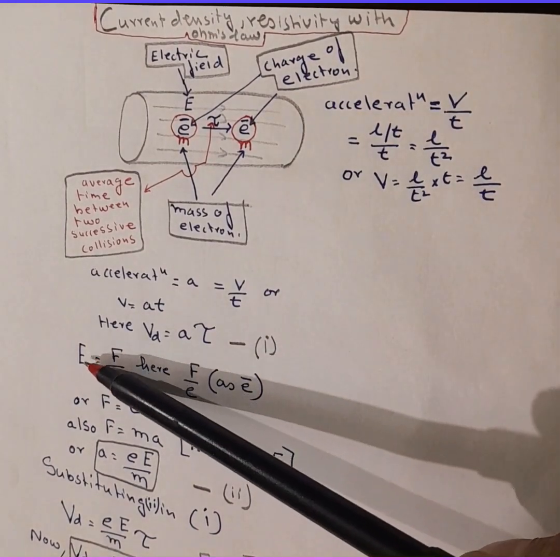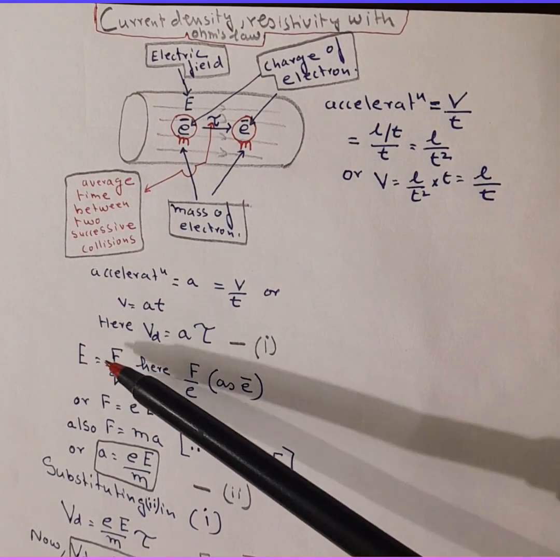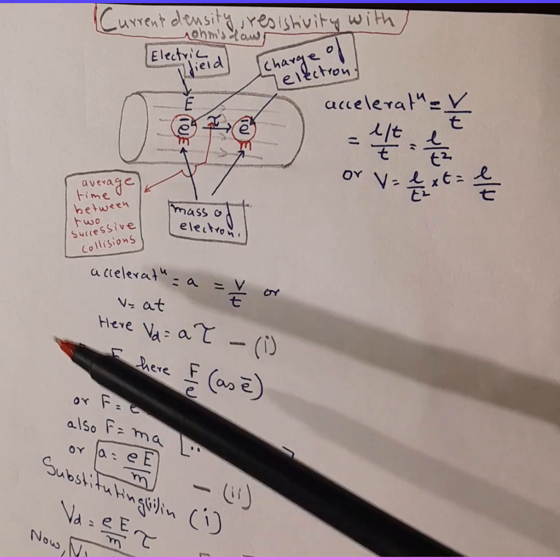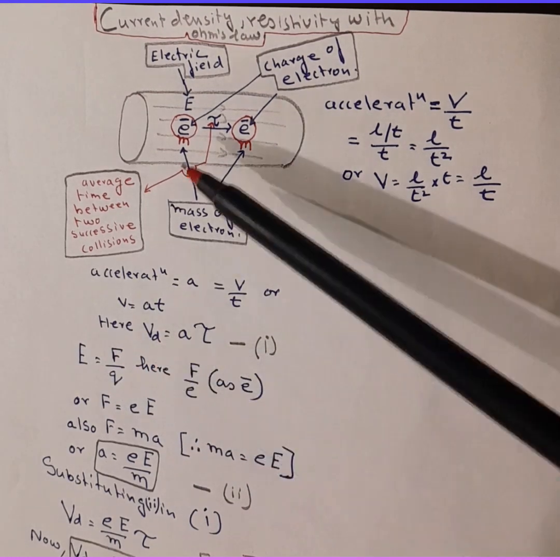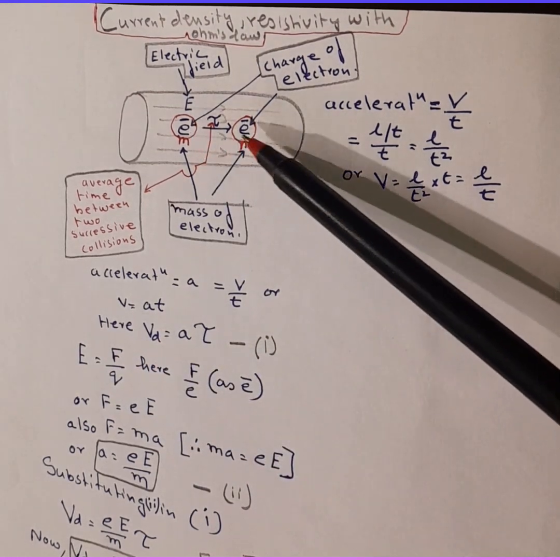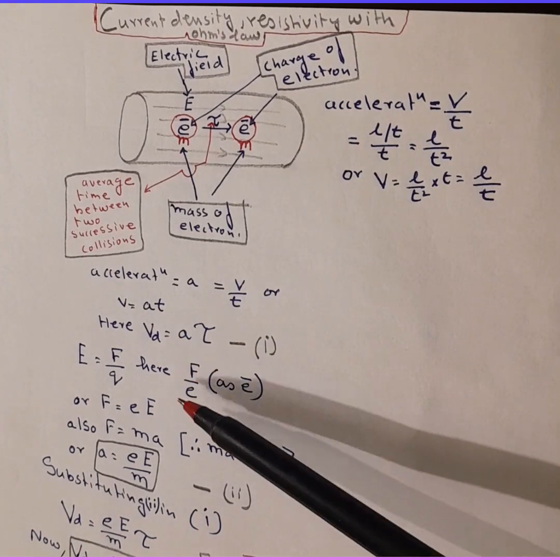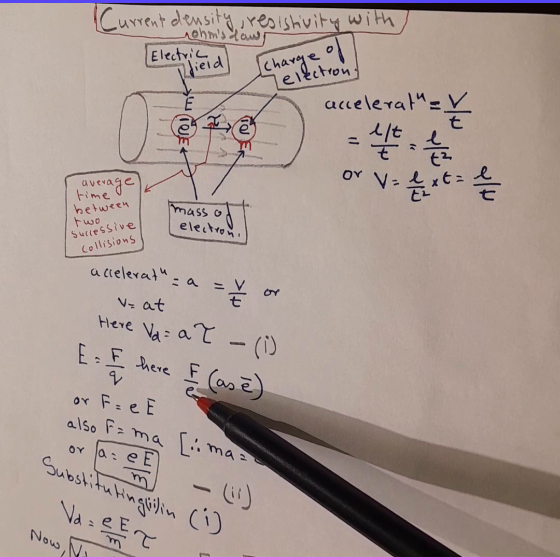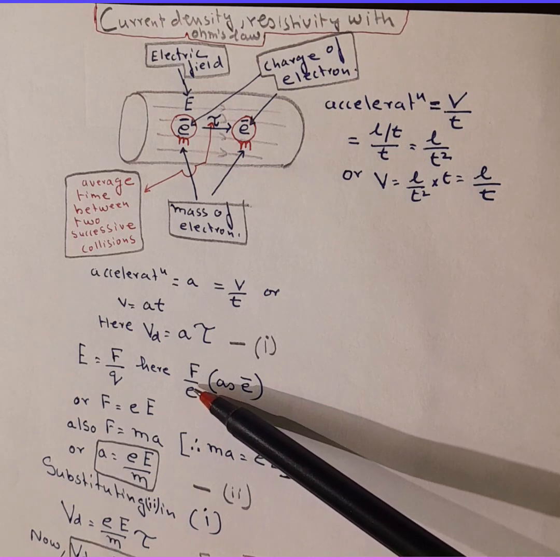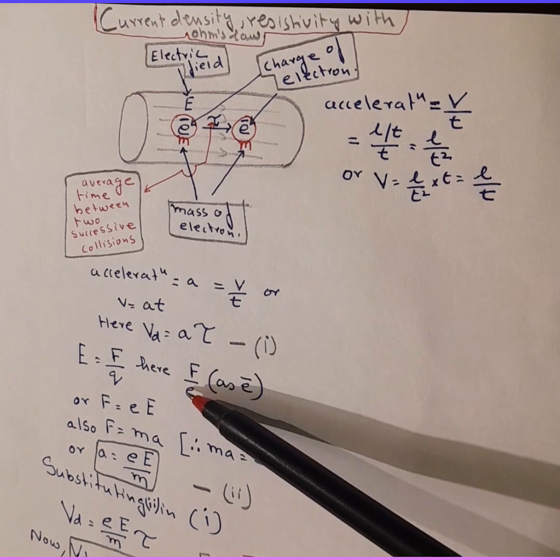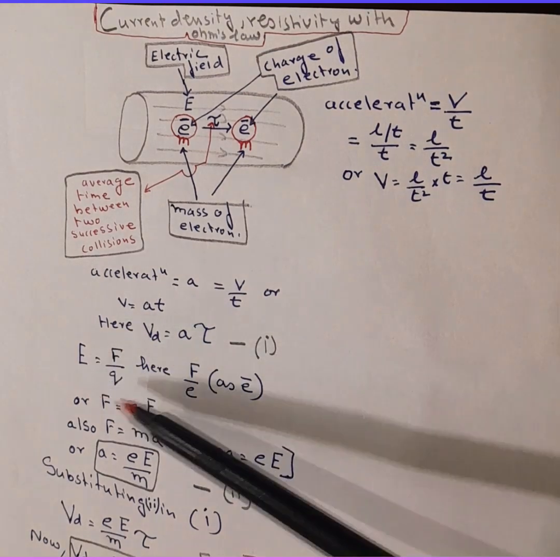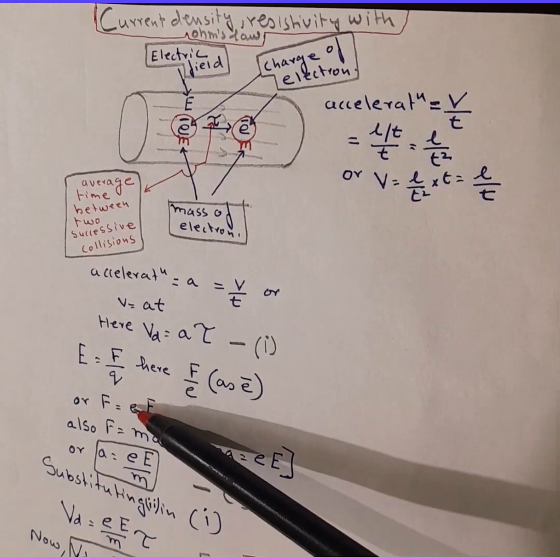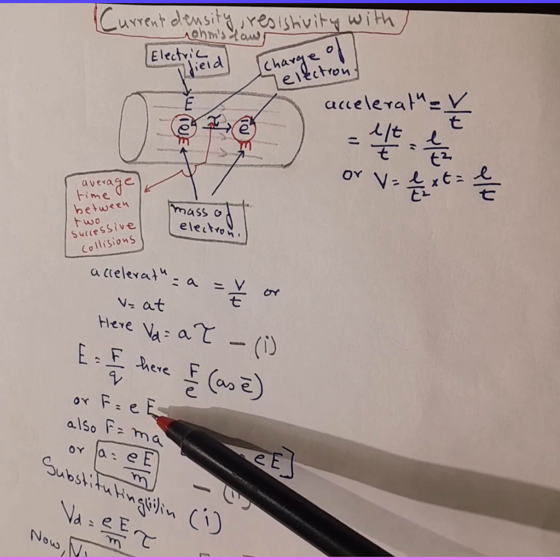We also know electric intensity E is equal to F over Q. Now here again, since it's electrons which are moving, so it would be F over e as we have electrons moving in the metal wire. So if I take E towards that side, force becomes E, that is electric charge into electric intensity.